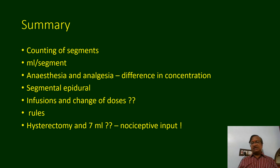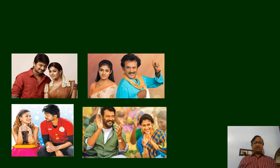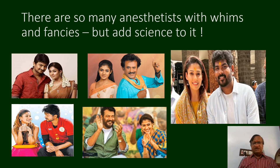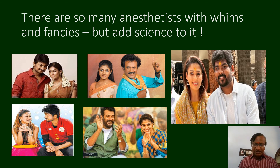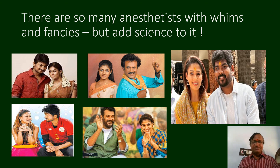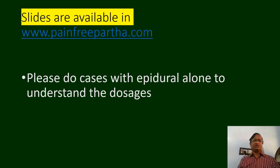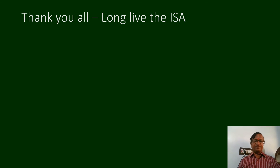For hysterectomy at 7 ml — where is the nociceptive input? There are two types of nociceptive input: sacral and thoracic. Are you targeting only one? This is what we should keep in mind. There are innumerable anesthetists with different preferences, but understand the science. Just because we have pushed 20 cm of catheter inside does not mean the catheter tip is at T4. Do not push the catheter more than 5 cm — it is likely to malfunction. Understand the science behind nociception; do cases with epidural awareness to understand what nociception you are blocking. Thank you all.